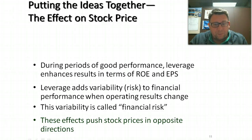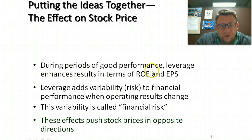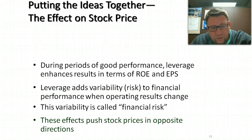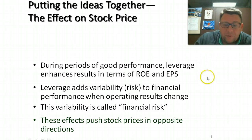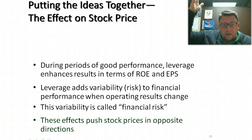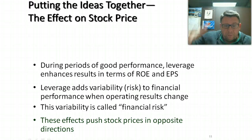Putting the ideas together — how does leverage affect the stock price? During periods of good times, leverage enhances ROE and earnings per share, and that causes stock prices to go up. Leverage adds variability, which is risk. We call this type of risk financial risk, and these effects could push stock prices in opposite directions — during good times, stock price is going up, but during bad times, that risk can be pushing stock prices down.